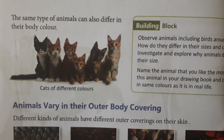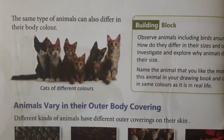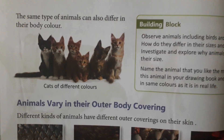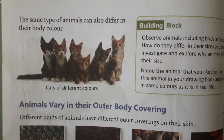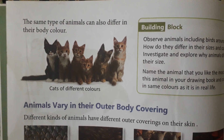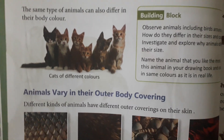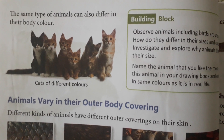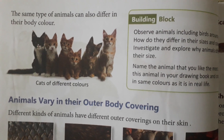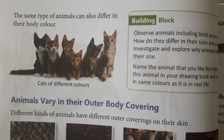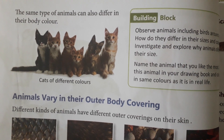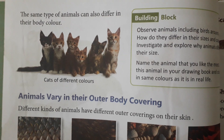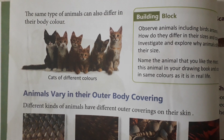Even the same type of animals can differ in their body color. Aap dekh sakte hain cats mein hi kitna difference hai - cat is the same animal, and yet in its body color alone there is so much difference. There is a lot of difference between their bodies. Now we will study how animals vary in their outer body covering.